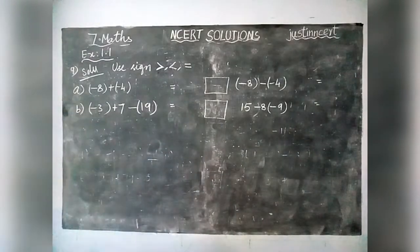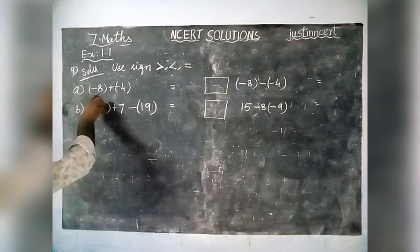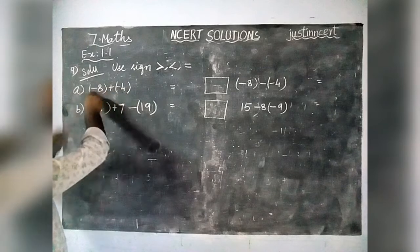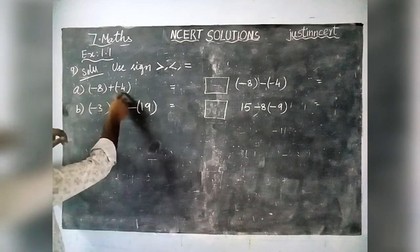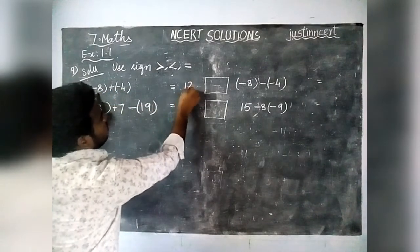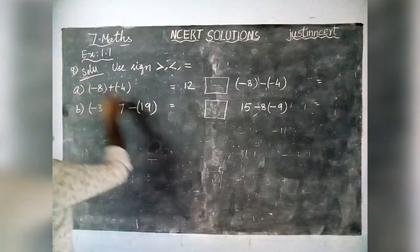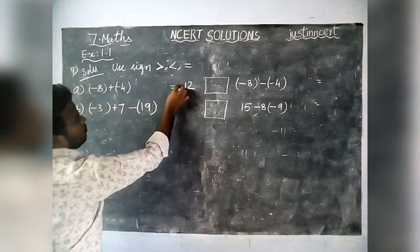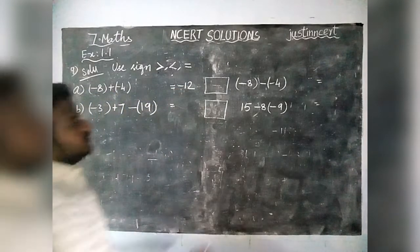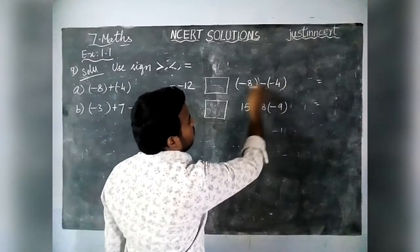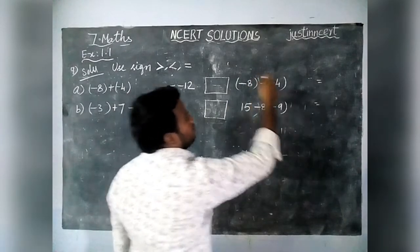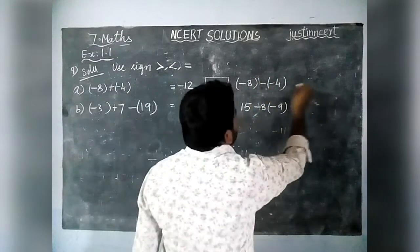First, option A: (-8) + (-4). Both have the same sign, minus. So we are adding these two: 8 plus 4 is equal to 12, and both are minus, so we write minus 12. This is the left hand side. Next, on the right hand side, both are also minus, but here another minus is there, so the sign will change.